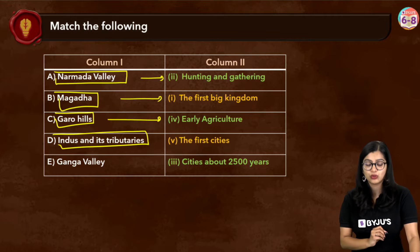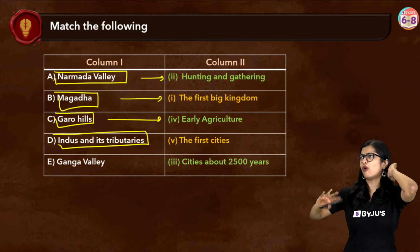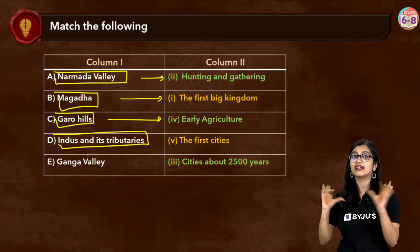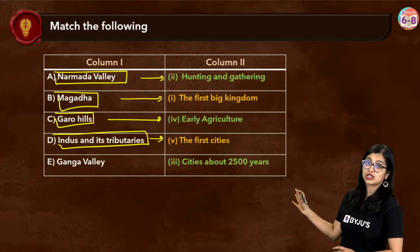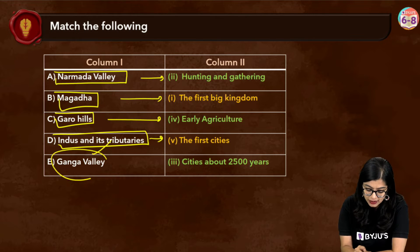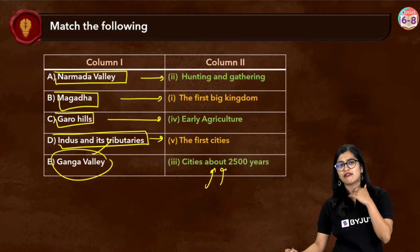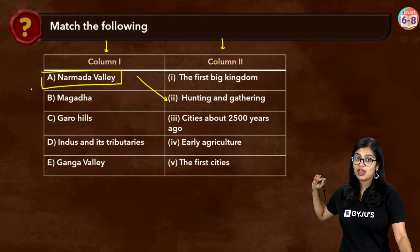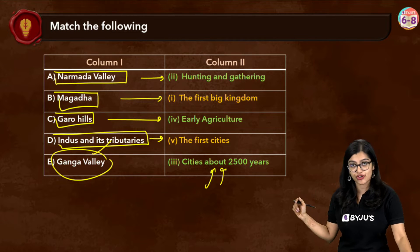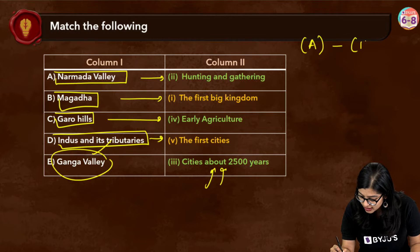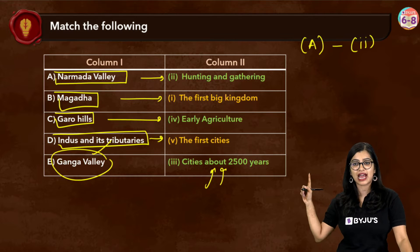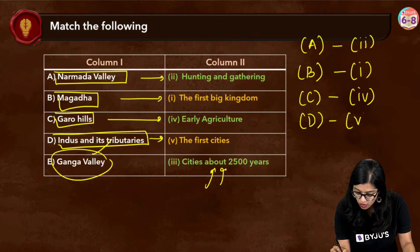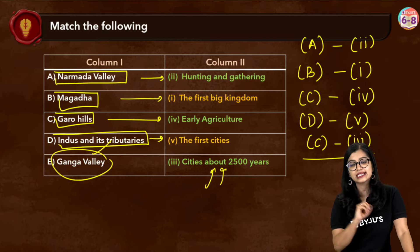For Indus and its tributaries, about 4700 years ago some of the earliest cities were established in and around this region — the first cities flourished along the banks of the Indus. And for the Ganga Valley, about 2500 years ago many cities flourished in and around that region. When writing the answer, rather than drawing arrows, write it cleanly: 'A matches to option number 2', and so on. Easy peasy.